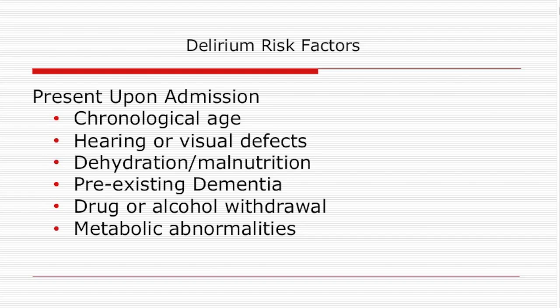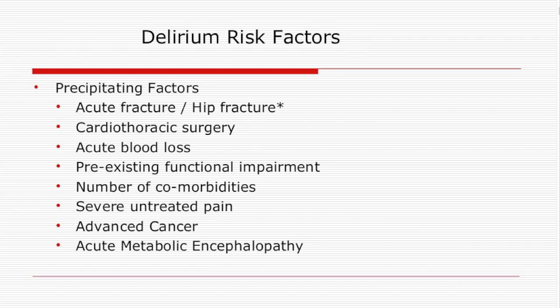The presence of hearing or visual impairment also impacts delirium risk. A person with hearing impediments is at increased risk while in the hospital. Dehydration and malnutrition also increase the risk, and pre-existing dementia increases the risk of delirium by about two to three fold. A history of drug or alcohol abuse also increases delirium risk, especially if unrecognized, because these individuals can go into acute withdrawal. The presence of a metabolic disorder such as electrolyte abnormalities, infection, or other underlying processes can also predispose patients to delirium.